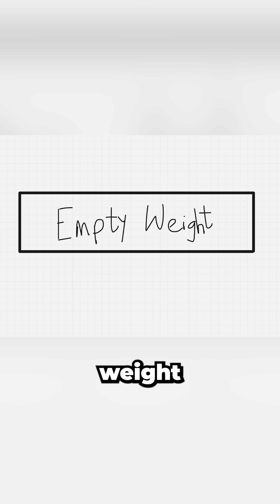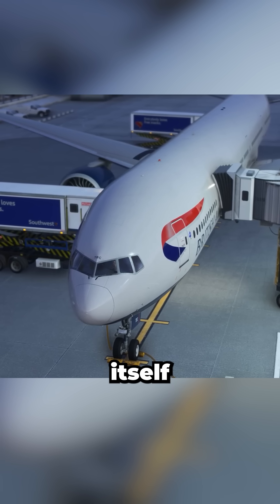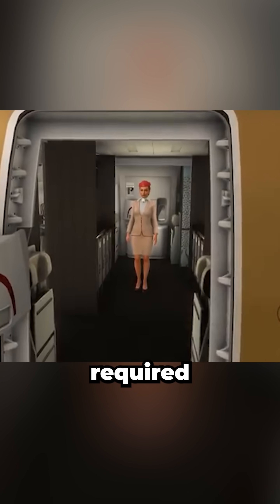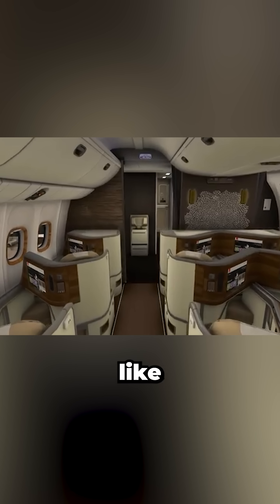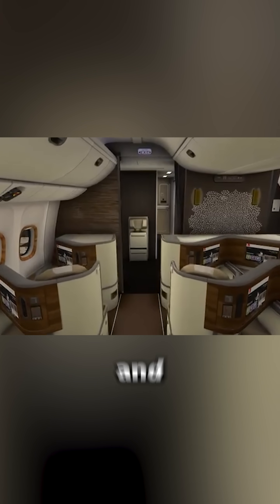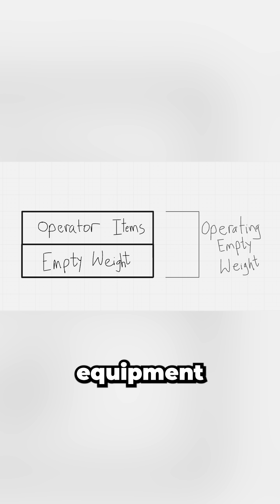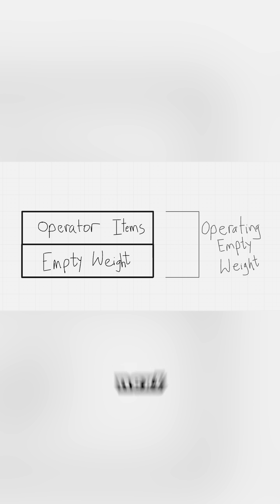We start with the empty weight — the aircraft itself, including the airframe, engines, and systems. Add everything required to operate it aside from fuel, like the crew, their bags, and emergency equipment, and you get the operating empty weight.